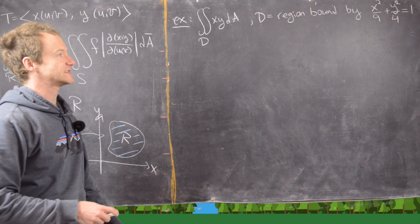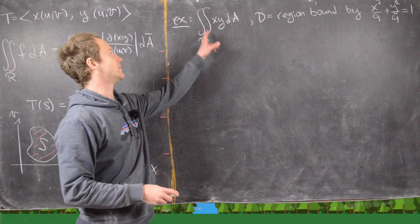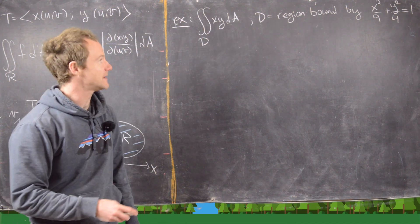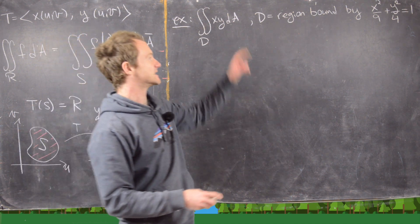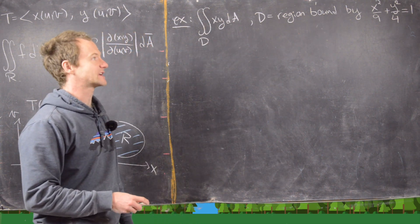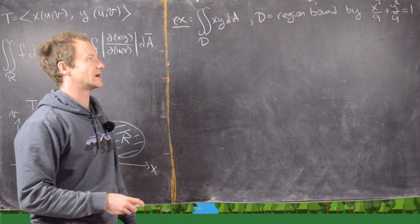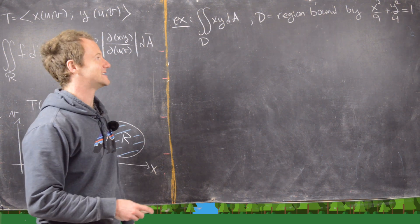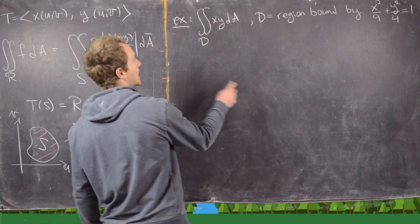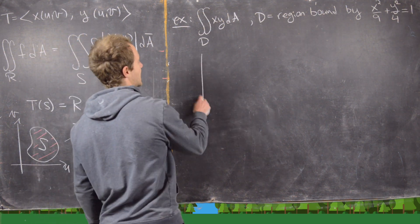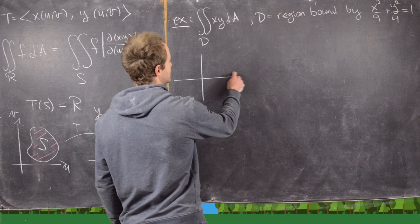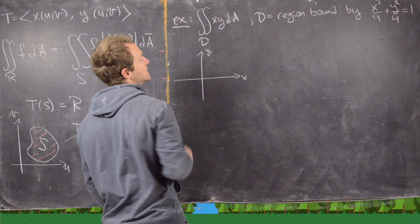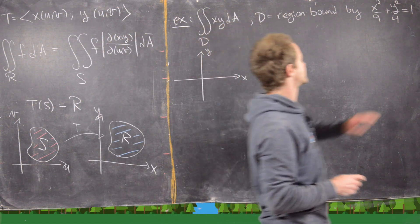The first example we want to look at is this double integral over the region D of xy dA, and D is going to be the region bounded by x squared over 9 plus y squared over 4 equals 1. So that is an ellipse. Let's go ahead and draw that. Here we have x and y.